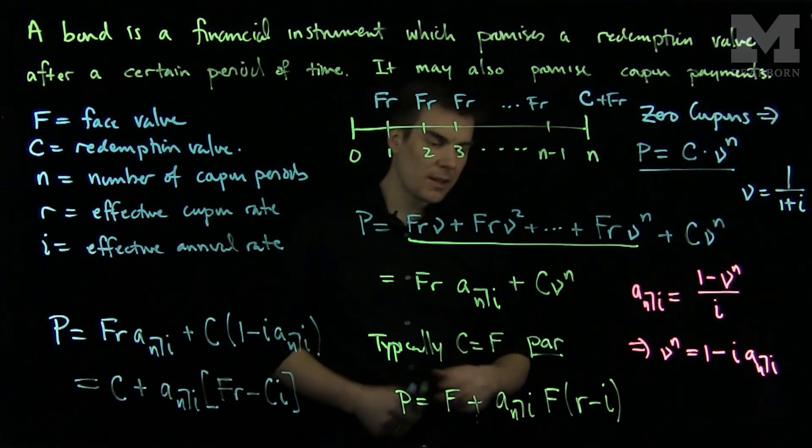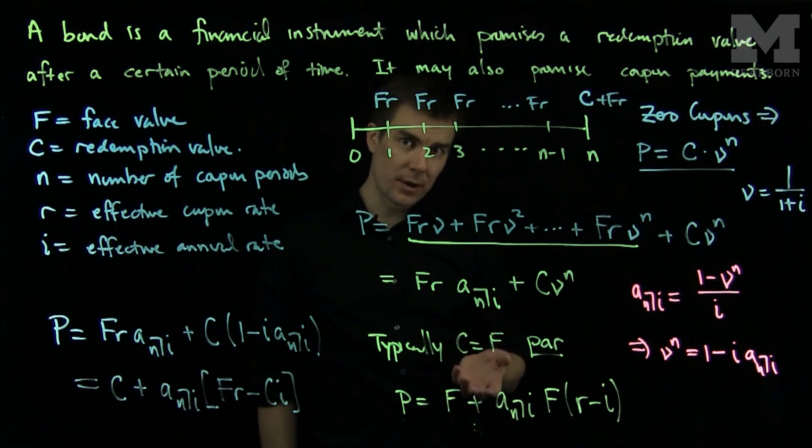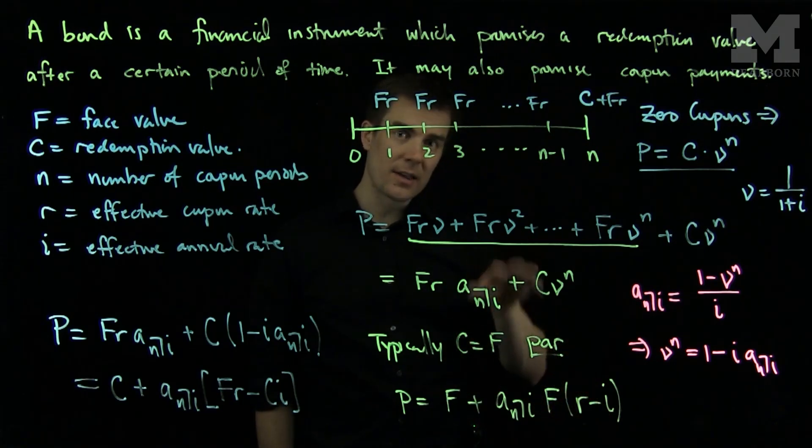So we see that if R is larger than I, the price increases as the number of periods increase. And if R is less than I, the price will decrease.